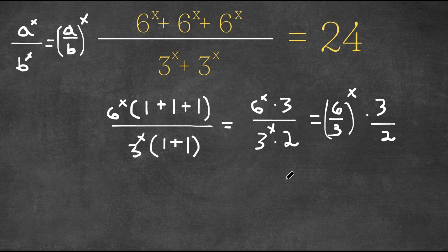Now 6 over 3 is, or 6 divided by 3 in other words, is 2. So we get 2 to the power of x times 3 over 2, and remember this is still equal to 24.